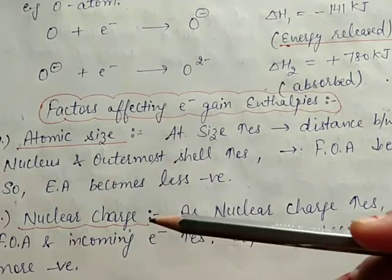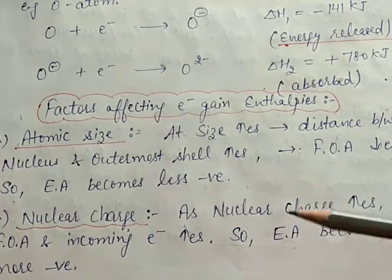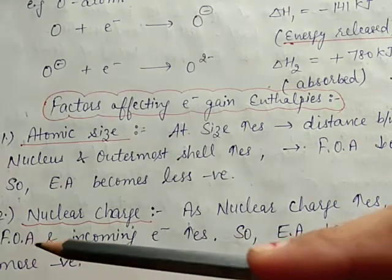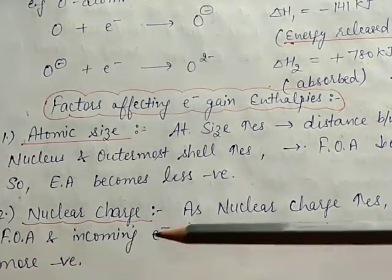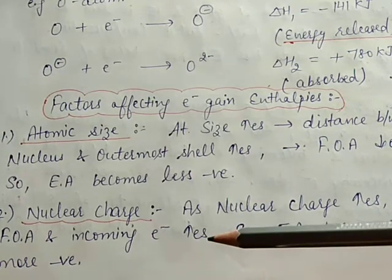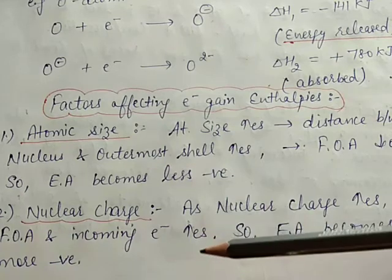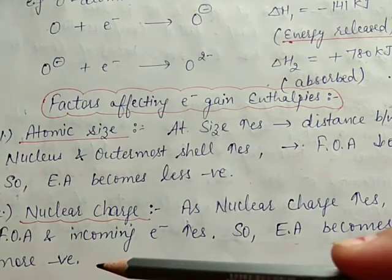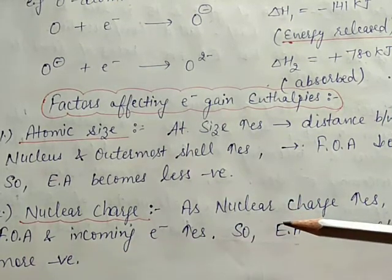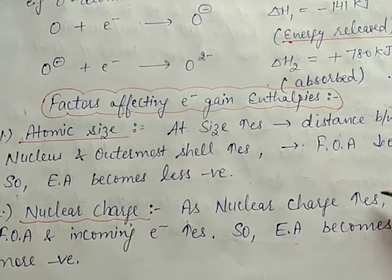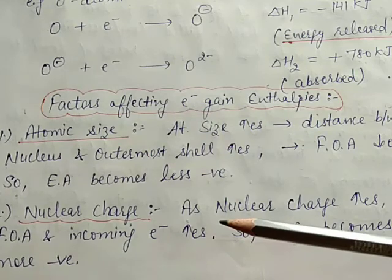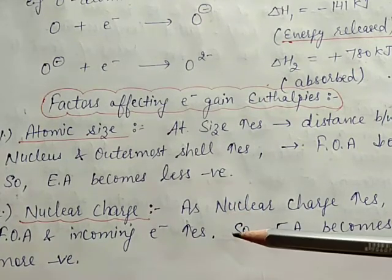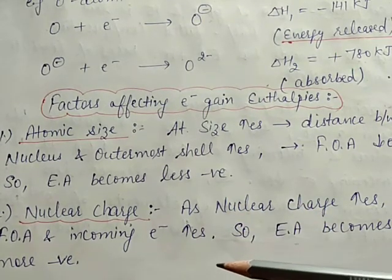The second factor is nuclear charge. As nuclear charge increases, the force of attraction between the nucleus and the incoming electron increases. So if force of attraction increases, the electron affinity value becomes more negative. When size decreases and nuclear charge increases, the force of attraction increases because the distance between the nucleus and outermost electrons decreases, making the electron affinity value more negative.